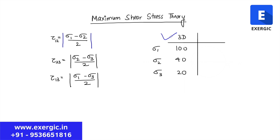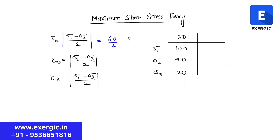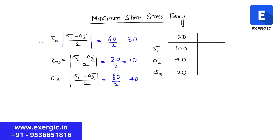For a practical 3D case with sigma_1 = 100 MPa, sigma_2 = 40 MPa, sigma_3 = 20 MPa: tau_12 = (100-40)/2 = 30 MPa, tau_23 = (40-20)/2 = 10 MPa, and tau_13 = (100-20)/2 = 40 MPa. Out of these three shear stress values, which one should be picked when considering failure?